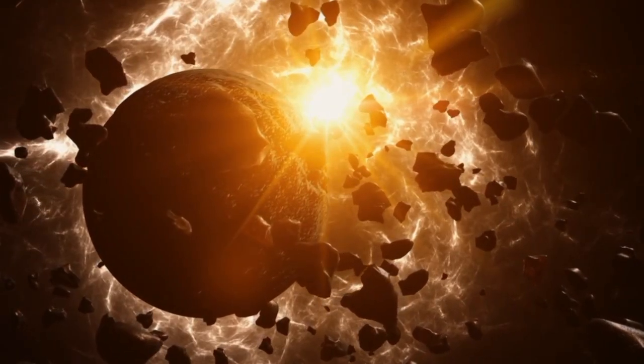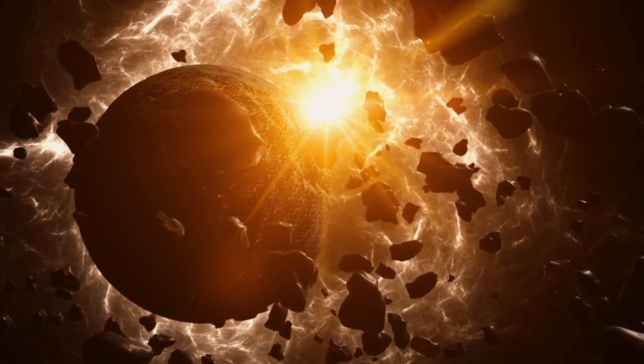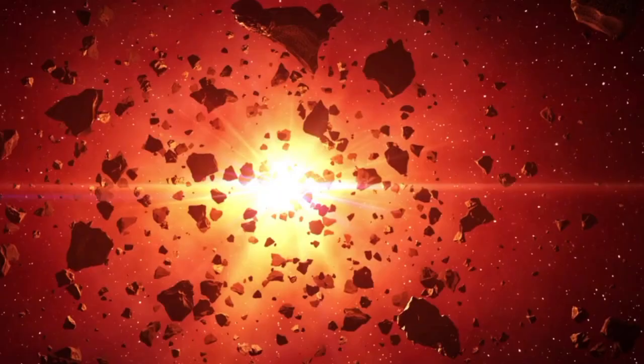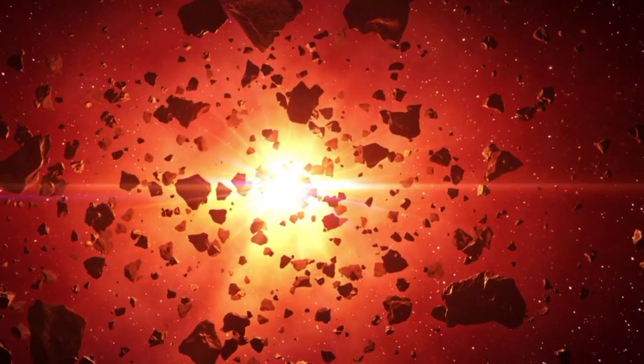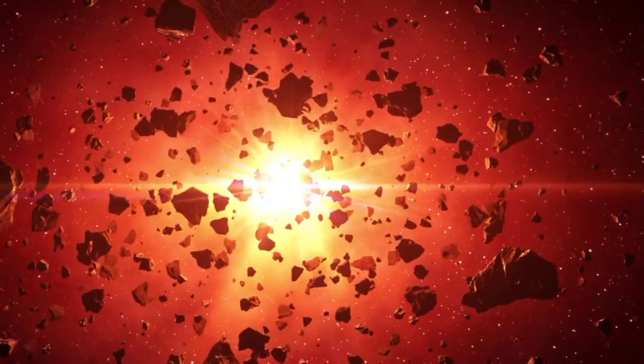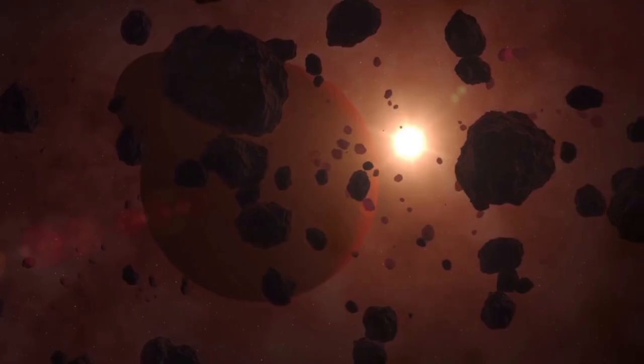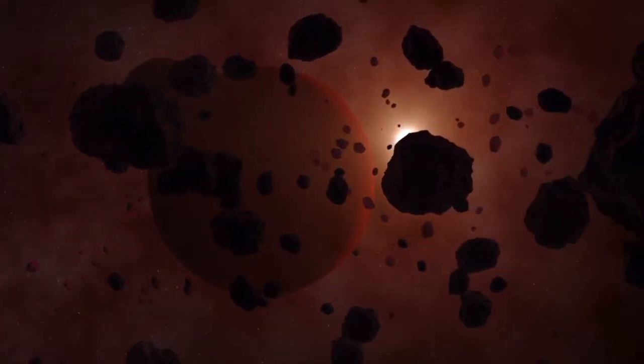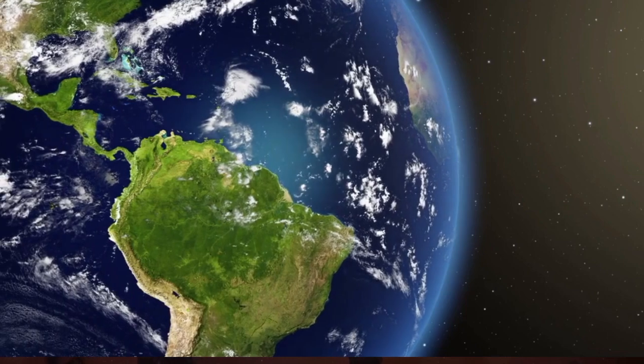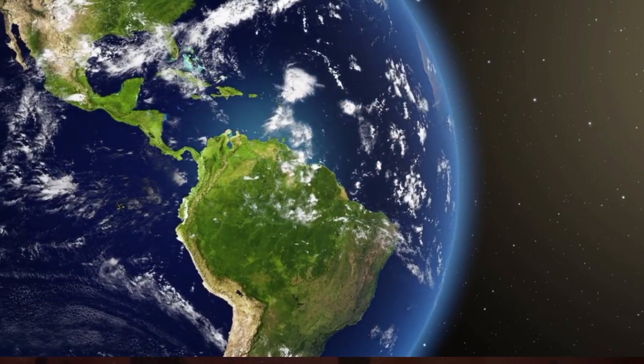Why Proxima b? Proxima b, sometimes called Alpha Centauri b, orbits an M-type red dwarf star. It is classified as a super-Earth, meaning it is more massive than Earth, but less so than ice giants like Neptune and Uranus. Its mass is estimated to be 1.07 times that of Earth, and it completes one orbit around its star in 11.2 Earth days, compared to Earth's 365.25-day orbit around the Sun.